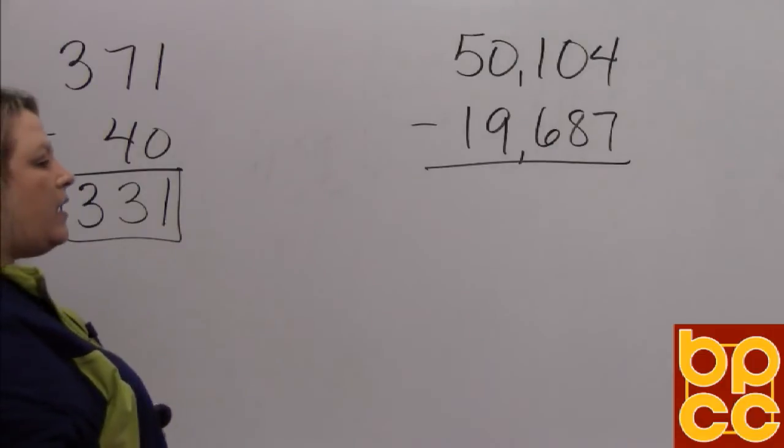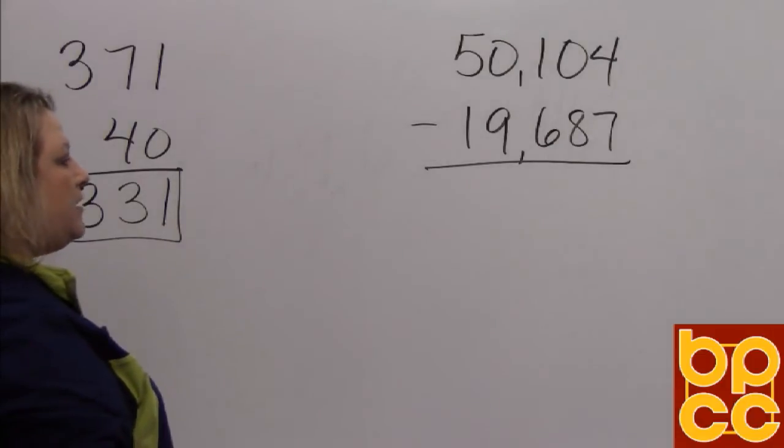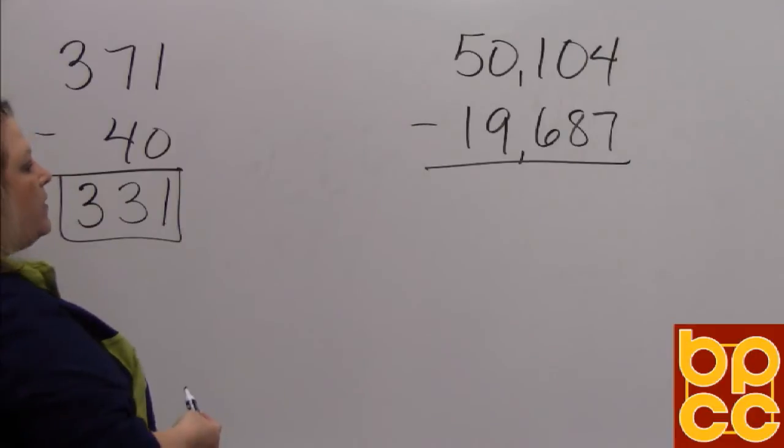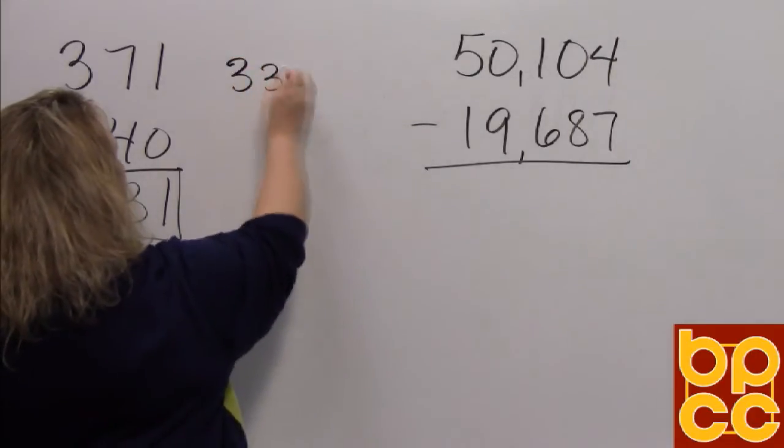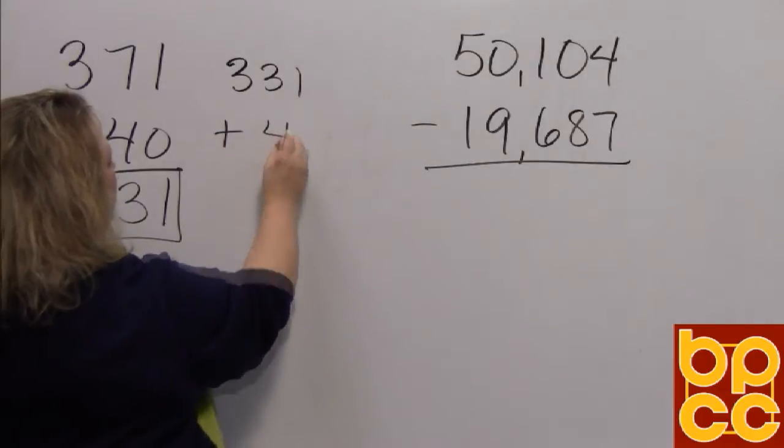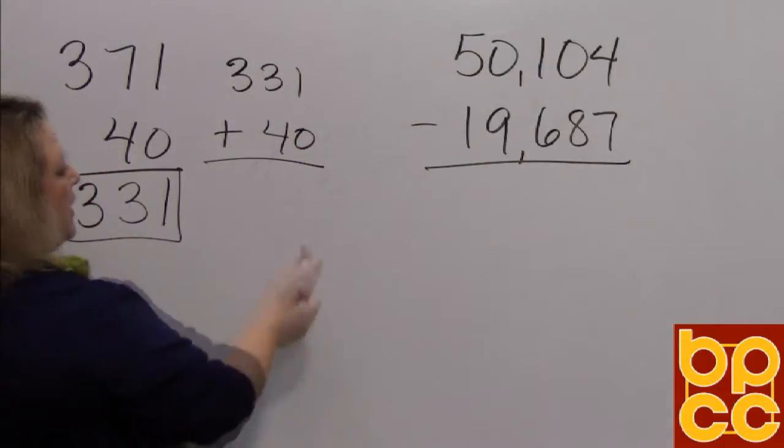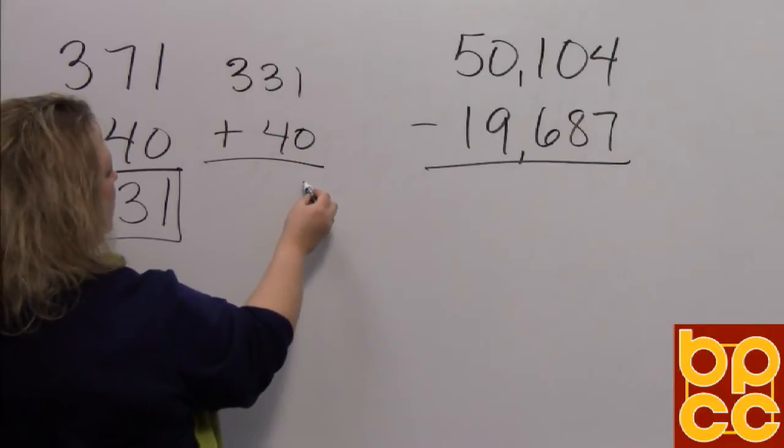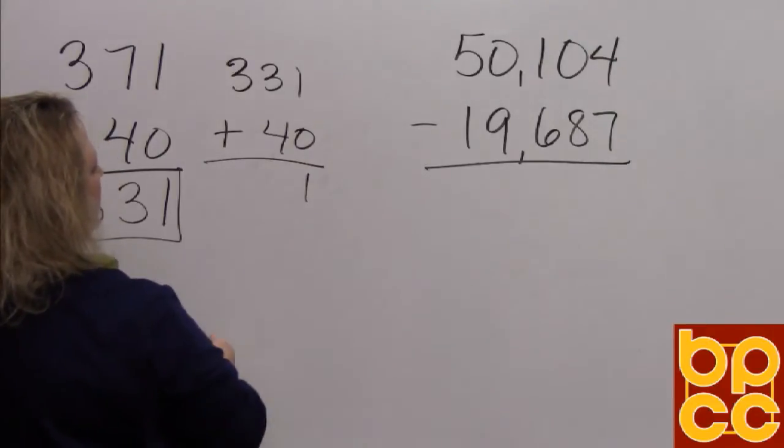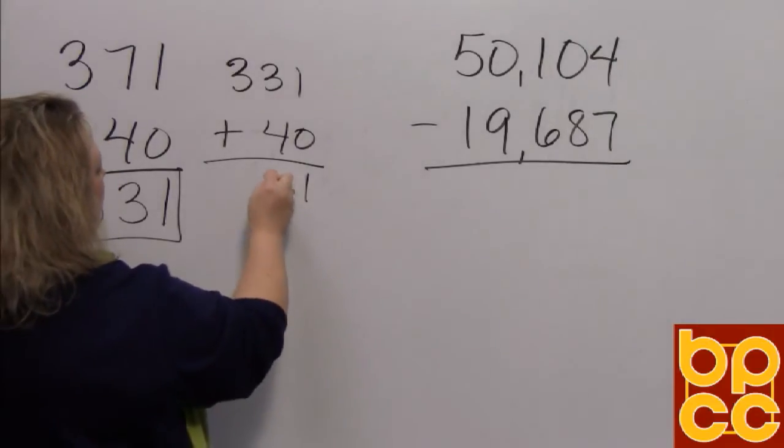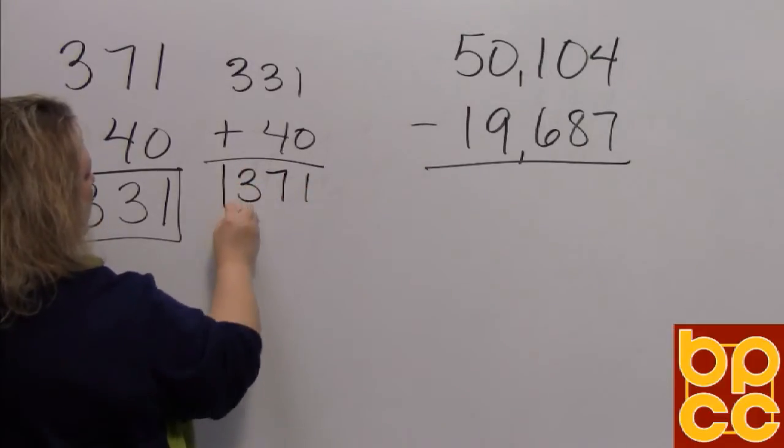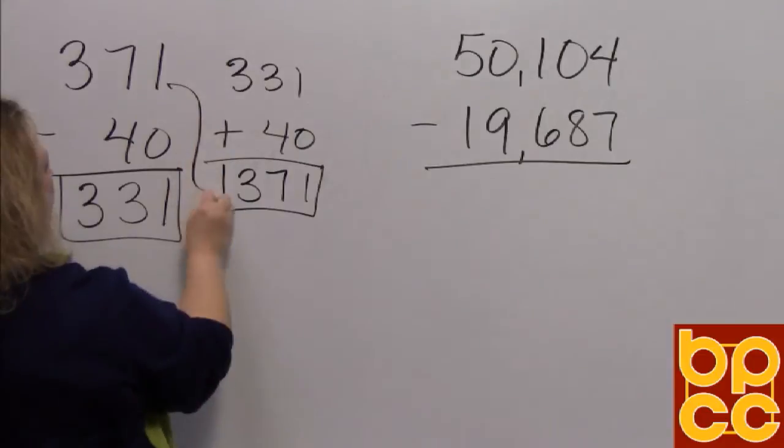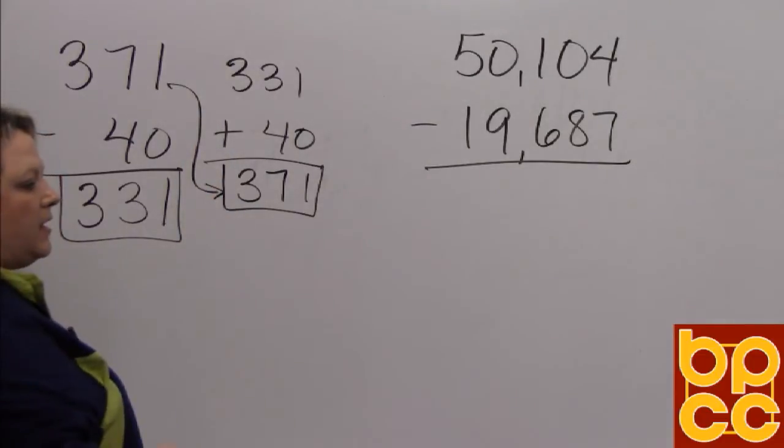The way we check our answer is to do addition to see if we get back what we started with. So when I do that, I have 331 and I want to add back the 40 that I took away. When I do that again, I start all the way to the right which is the ones column and that gives me 1. In the tens column, 3 plus 4 makes 7. And in the hundreds column, I just bring the 3 down. Because I got what I started with, I know that I did it correctly.